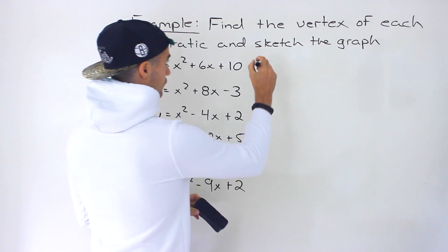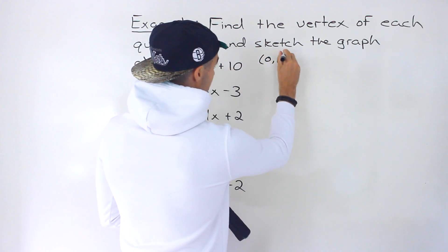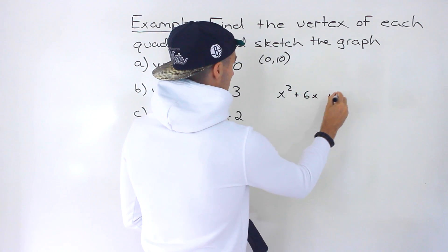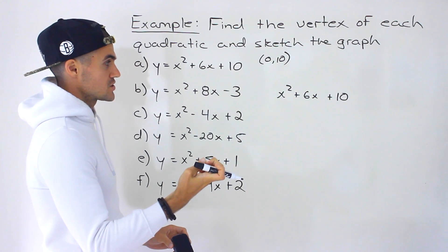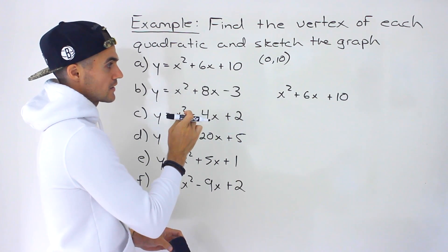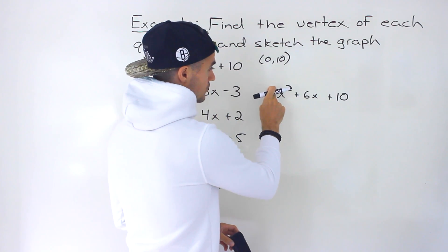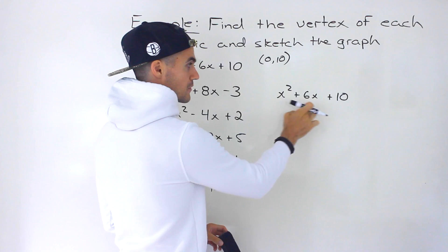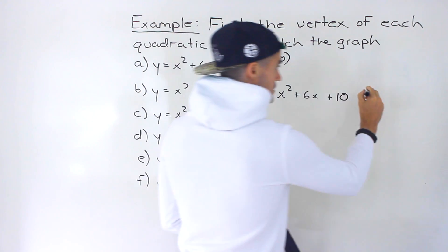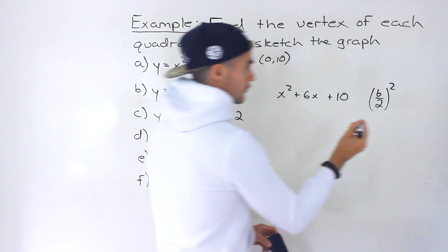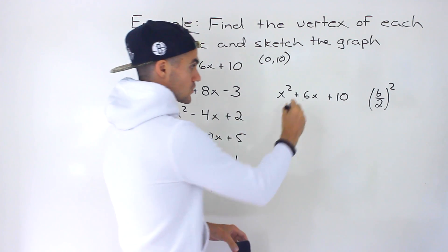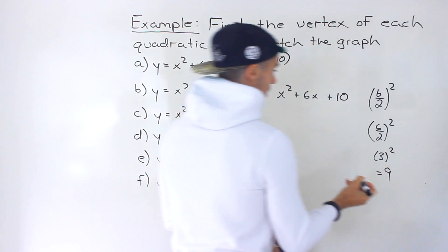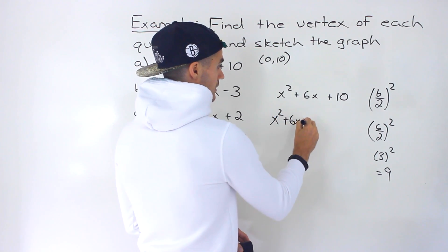For the first quadratic, the y-intercept is (0, 10). Now let's find the vertex by completing the square to convert to vertex form. Because a equals one, we don't need to factor anything out from the first two terms. We go straight into using the formula: take the b value, divide by 2, then square it. So we take 6 ÷ 2 = 3, and 3² = 9.